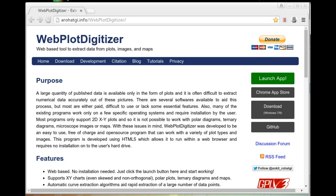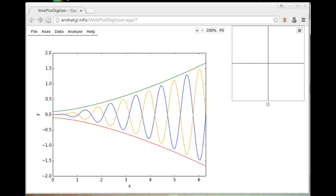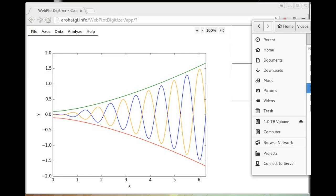WebPlotDigitizer is an online and free to use tool. Just visit the website and click on the launch app button on the side. Once the app starts, you are ready to specify the image. You can either choose the load image option under the file menu, or you can also simply just drag and drop your favorite image.